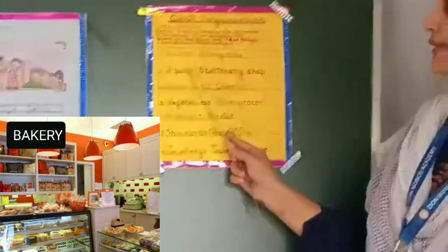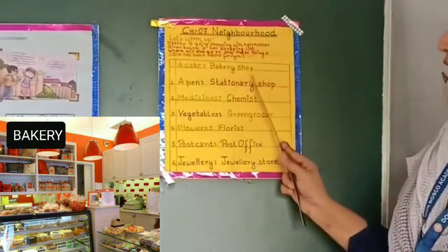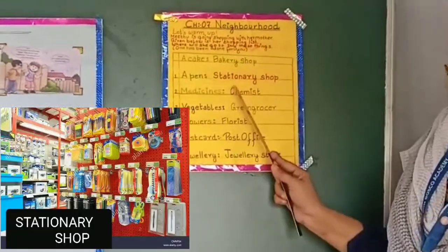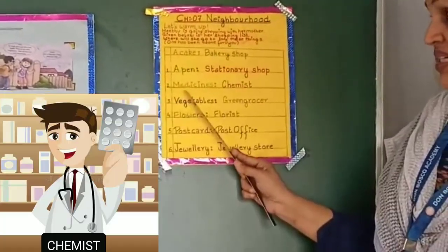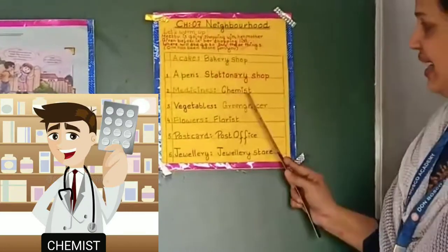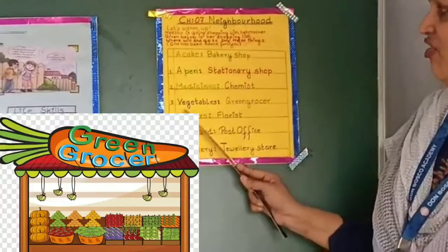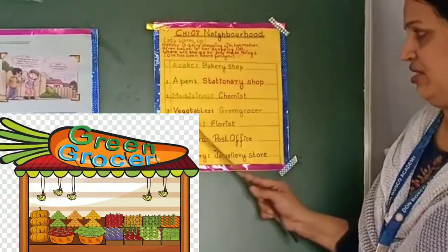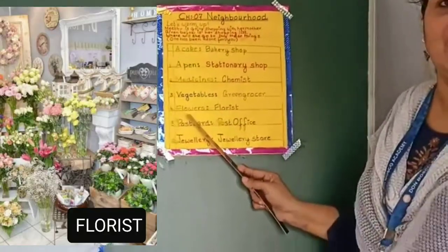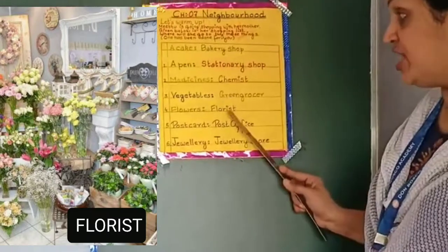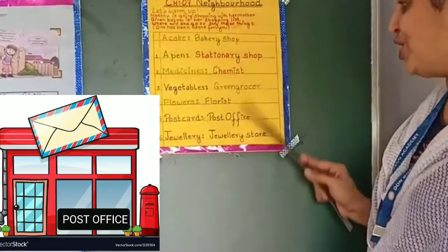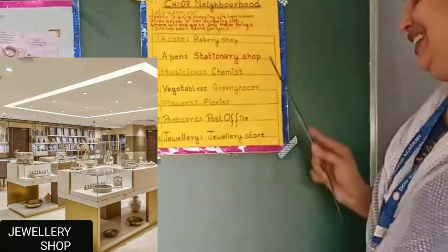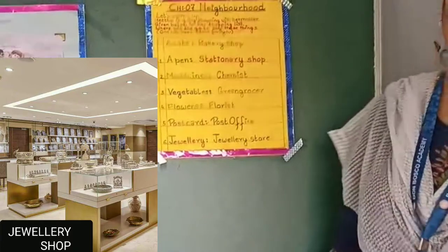A cake — baking shop. A pen — stationery shop. Medicines — chemist. Vegetables — green grocer. Flowers — florist. Postcard — post office. Jewelry — jewelry store.